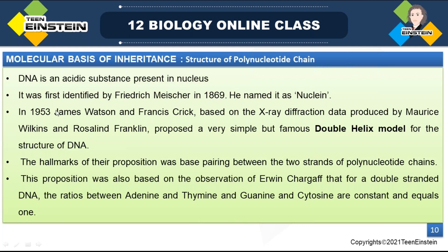In 1953, James Watson and Francis Crick, based on the X-ray diffraction data and studies of Rosalind Franklin and Maurice Wilkins, proposed the famous double helix model as the structure of DNA.